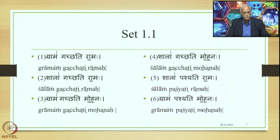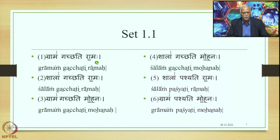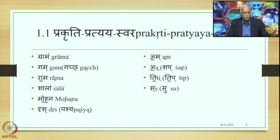So if we have these six sentences — Gramam Gachyati Ramaha, Shalam Gachyati Mohanaha, Shalam Pashyati Ramaha, and Gramam Pashyati Mohanaha — we notice that there are some accent marks. Gramam has got the initial Udatta, therefore this Anudata becomes Swarita. There is no mark in Gachyati Ramaha, and Ramaha is Udatta at the end so this Anudata is shown as Anudata. Now Gramam Gachyati Ramaha has got a peculiar accent. If we split Gramam, Gachyati, and Ramaha we shall get separate accents of each individual word.